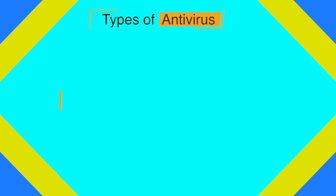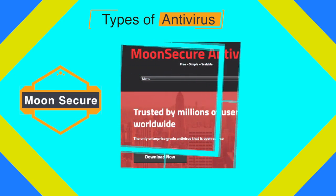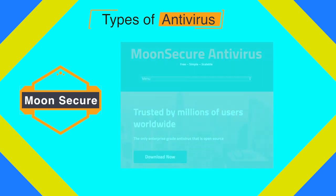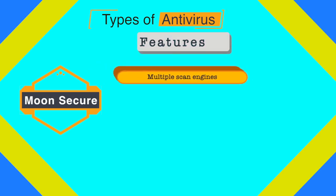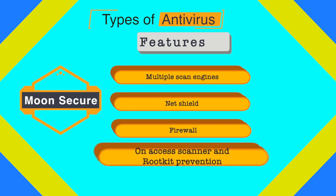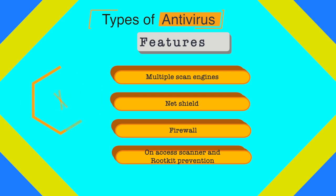The next antivirus is Moon Secure antivirus, which aims to be the best free antivirus licensed under the GPL license. It offers multiple scan engines, a net shield, a configurable firewall, on-access and on-execute scanning, and rootkit prevention. Some features available in commercial versions are also available in this antivirus.